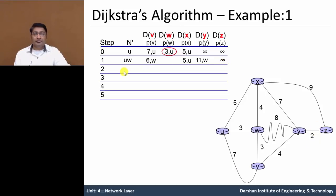Now in next step, before going to next step, the least cost value is 5. So x. So u, w and then x. These three nodes are now known: u, w and x.